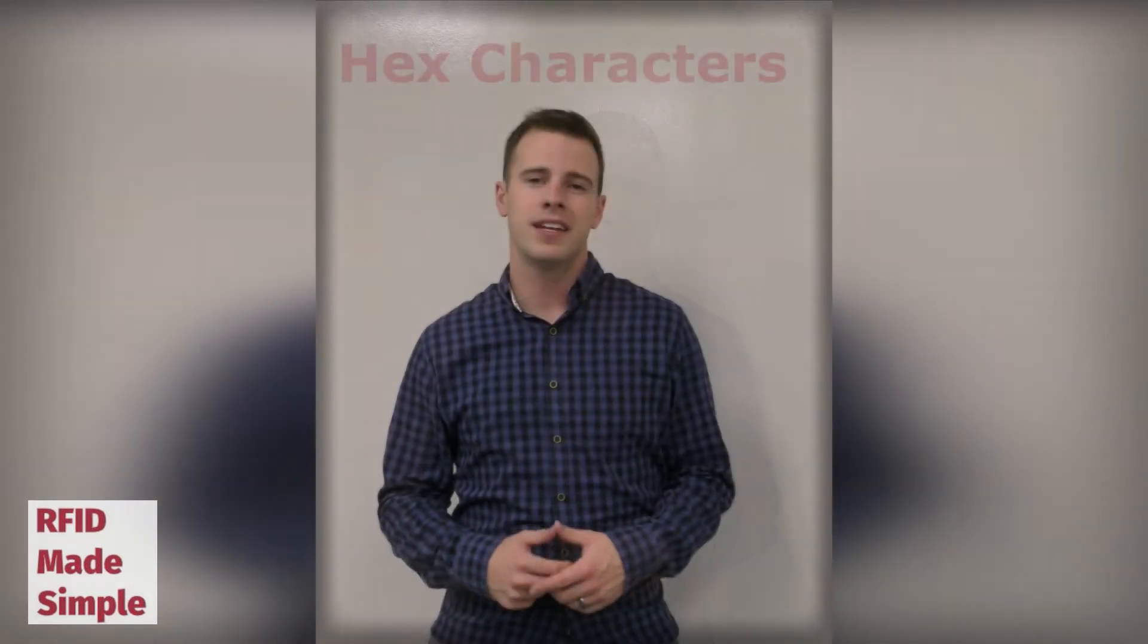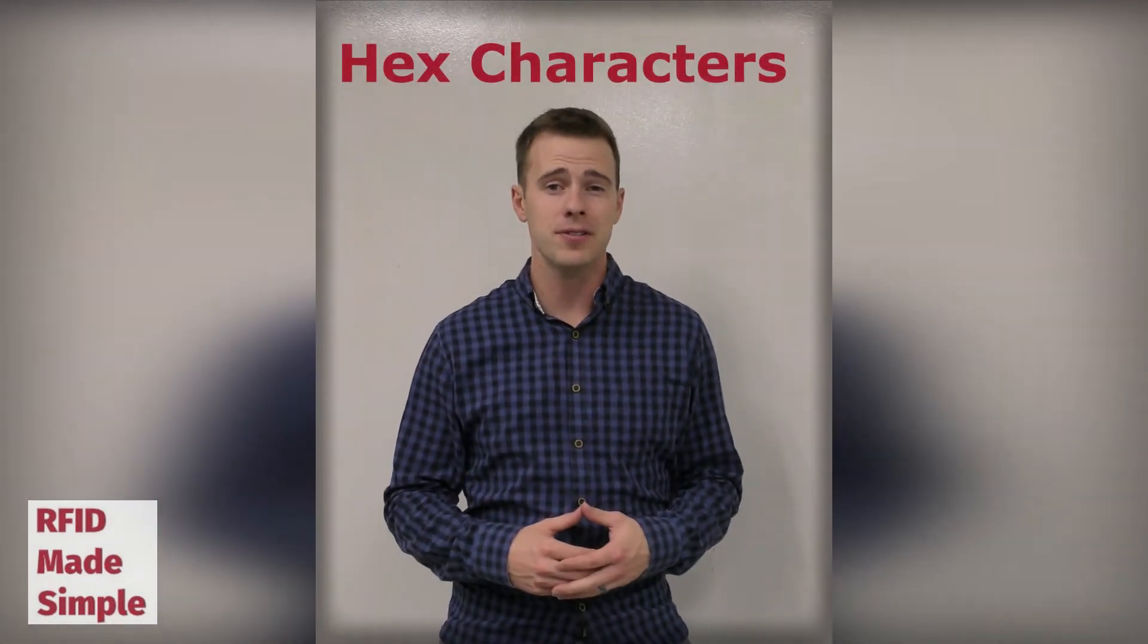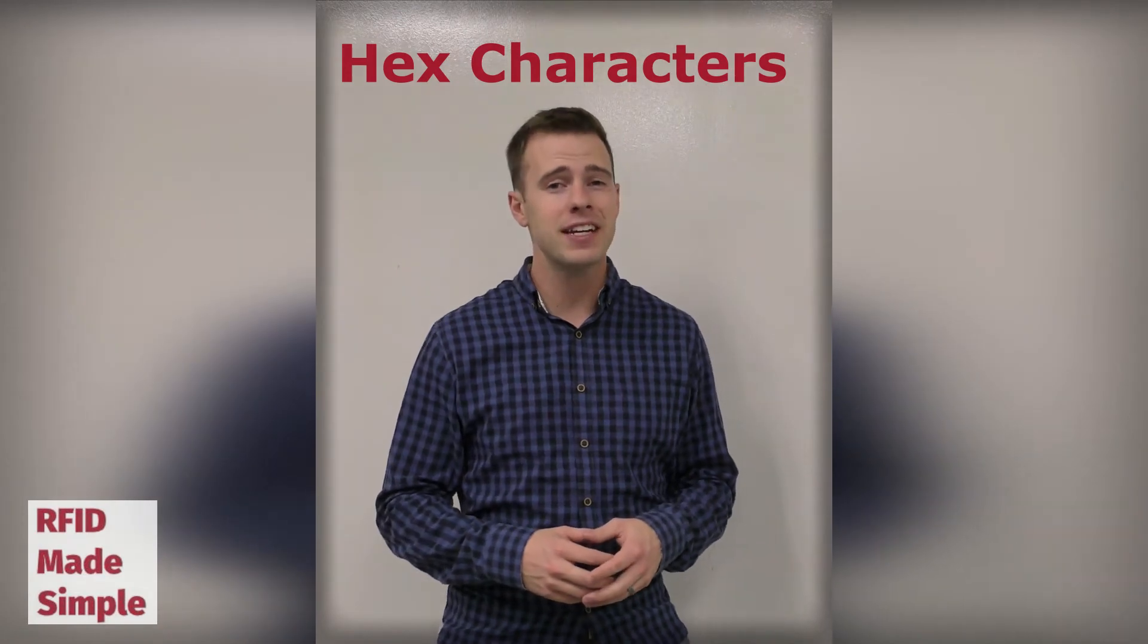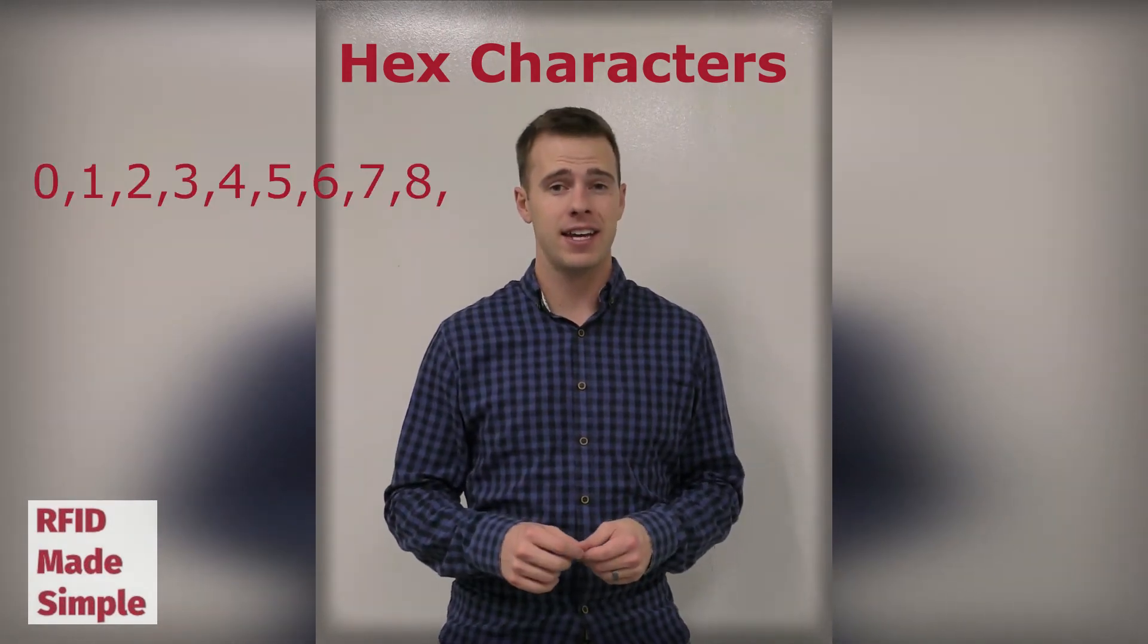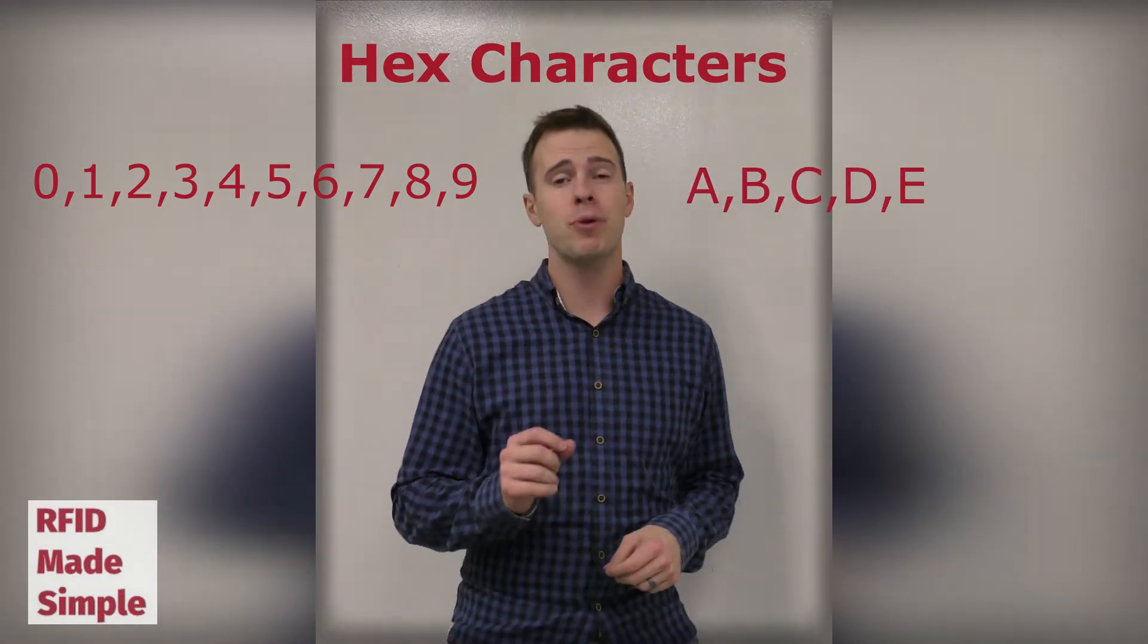These ones and zeros are referred to as bits, but in order for us humans to understand these long strings of ones and zeros, we convert those strings or bits into hexadecimal characters. Hexadecimal characters include 16 alphanumeric characters 0 to 9, capital A through F.